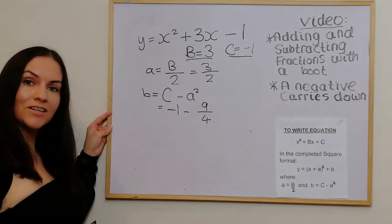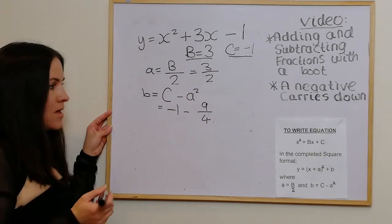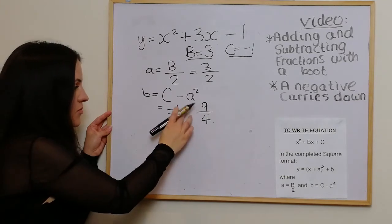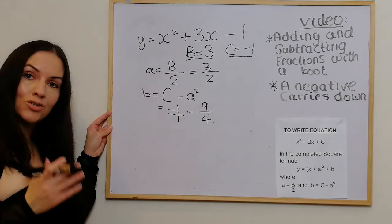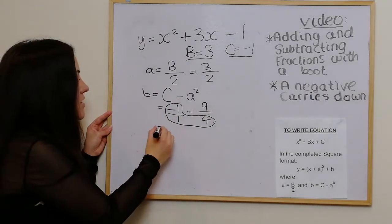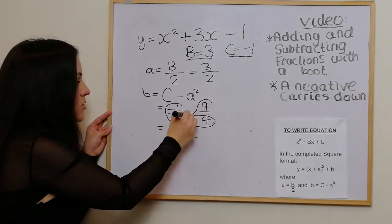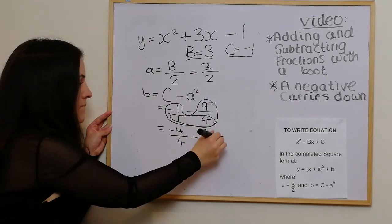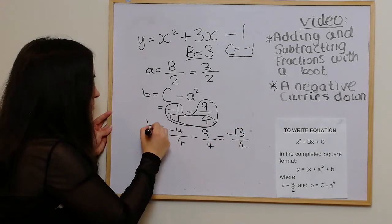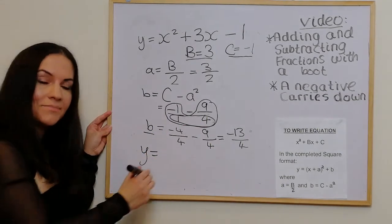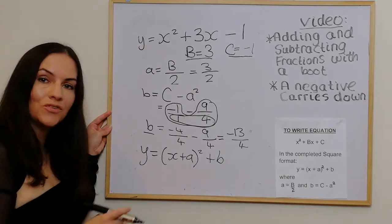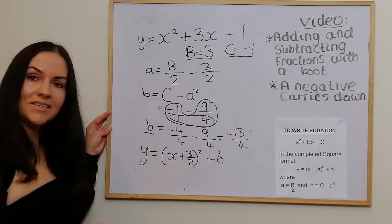We need to subtract fractions: minus 1 minus 9 over 4. We put minus 1 over 1 so both are fractions, then use the boot method — multiplying the left side by 4 to get minus 4 over 4, then taking away 9 over 4, giving minus 13 over 4. That's our b value. Putting it back into y equals (x + a)² + b, a is 3 over 2 and b is minus 13 over 4.